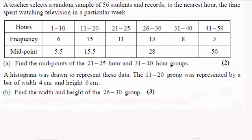Hi there, now for this question first we've got to find the midpoints of the 21 to 25 hour and 31 to 40 hour groups. To do this, take care we've got gaps here in our intervals between 20 and 21, so the lowest bound here is 20.5, the upper bound between 25 and 26 is 25.5.